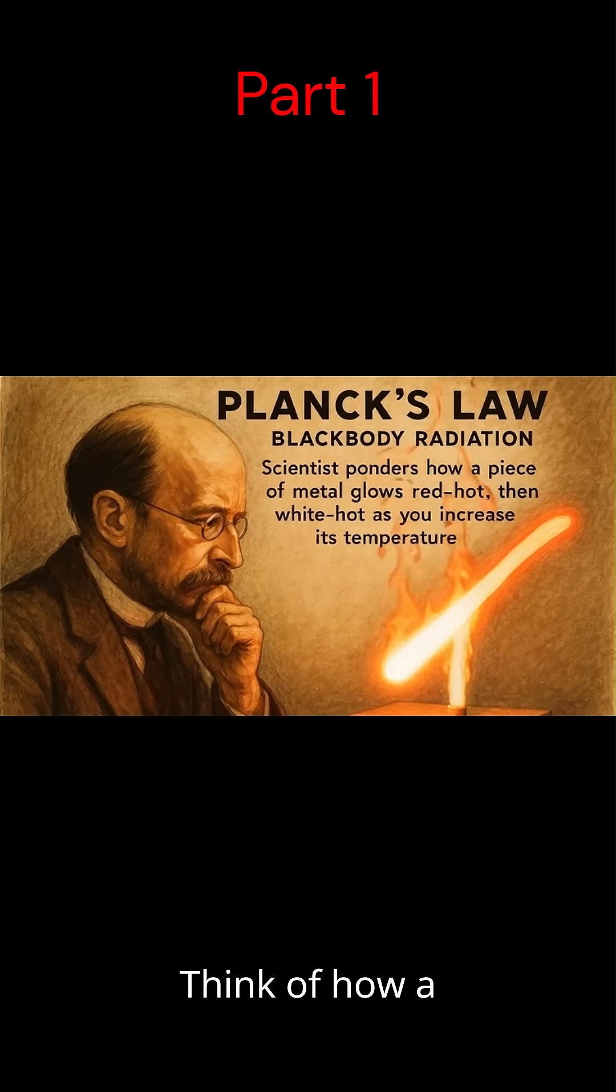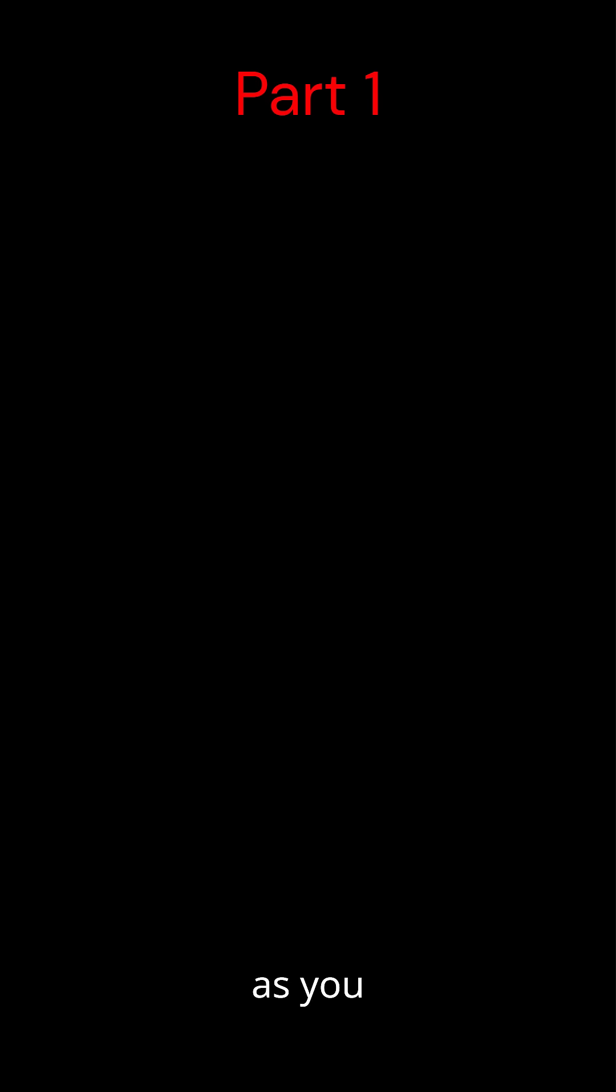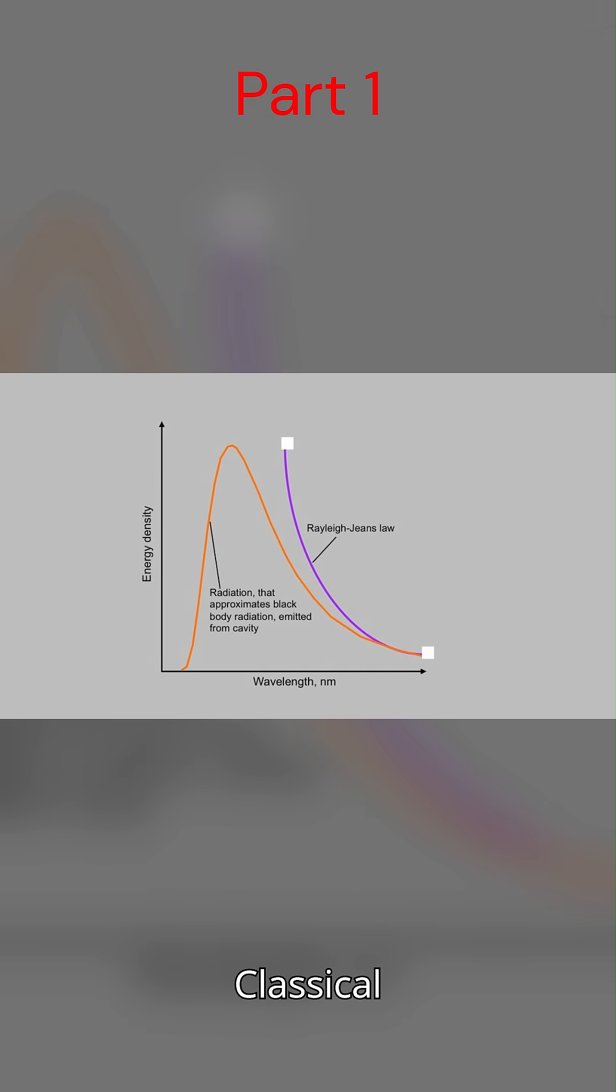Think of how a piece of metal glows red-hot, then white-hot as you increase its temperature. Classical physics predicted something called the ultraviolet catastrophe. According to the established Rayleigh-Jean's Law, as wavelengths got shorter, moving toward ultraviolet light.